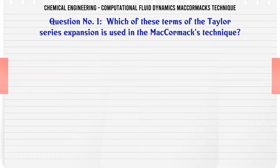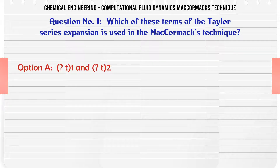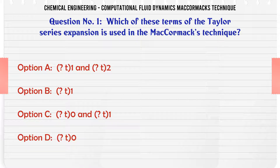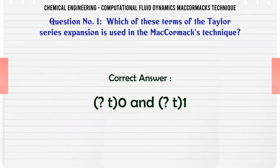Which of these terms of the Taylor series expansion is used in the MacCormack technique? A. T1 and T2. B. T1. C. T0 and T1. D. T0. The correct answer is T0 and T1.